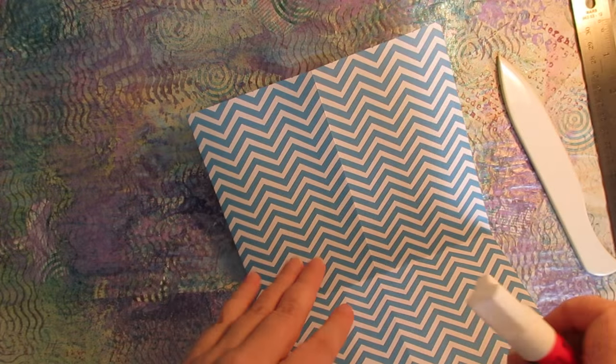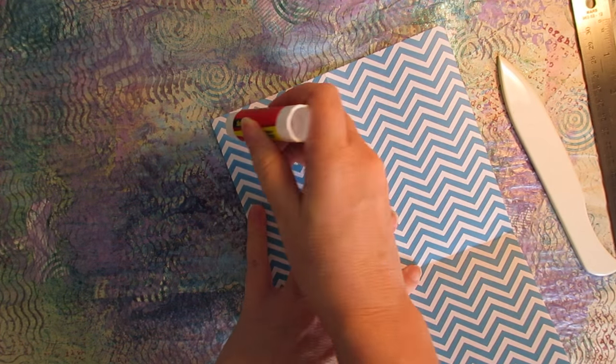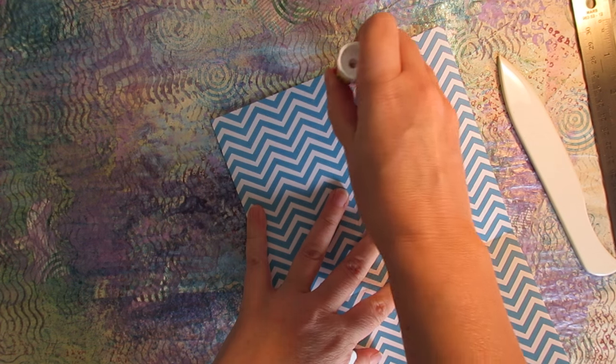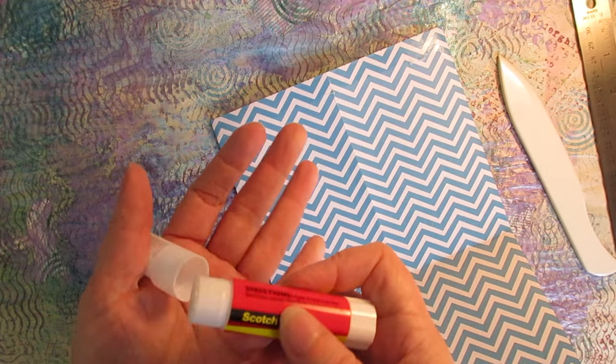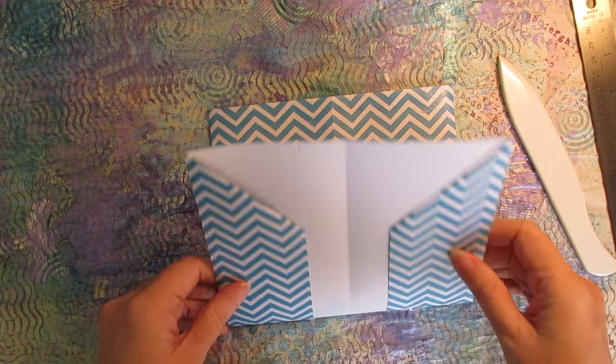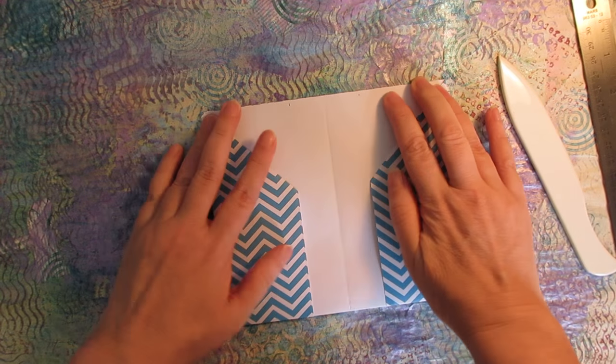On the top of the page, you want to take your glue stick, you can use any kind of glue you want, and run some glue along the top, make sure you get the corners real well. And press those together really well.